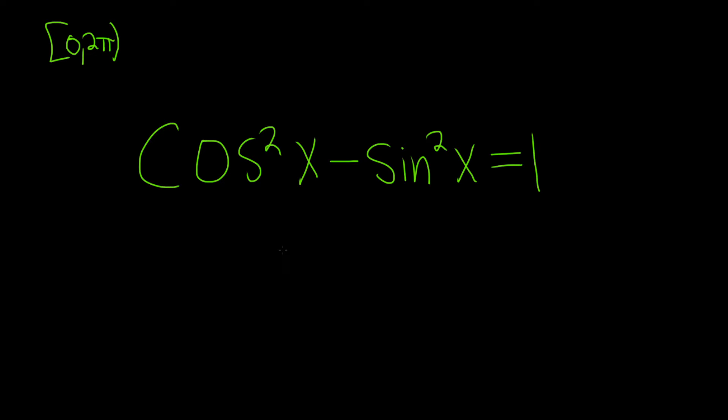In this problem, we have a trigonometric equation. We have cosine squared minus sine squared, and that's actually equal to 1. So let's go ahead and try to work through this solution.